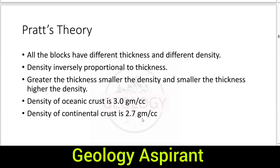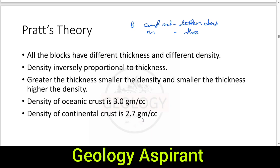Now coming to Pratt's hypothesis. Pratt changed one key thing from Airy's hypothesis. He said crustal blocks have different density AND different thickness — the inverse of each other. If Airy said density is the same but thickness varies, Pratt reversed this: density inversely proportional to thickness — rho is inversely proportional to T.